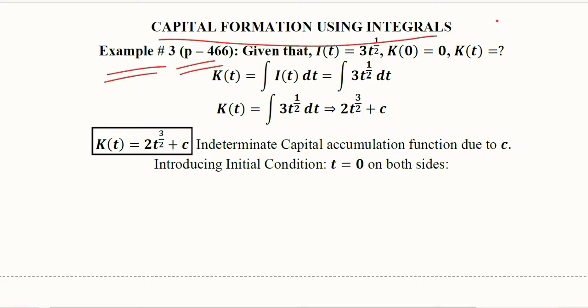We are given an investment function as I(t) = 3t², where t is the independent variable. The capital initial condition is K(0) = 0, that is when no time has passed, the capital is equal to zero. Now we are to develop the time path of capital, that is, the solution of the capital function.